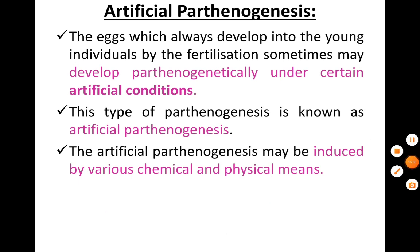The next concept is Artificial Parthenogenesis. As the name suggests, this does not occur in nature, but we can induce this kind of parthenogenesis. The eggs develop into young individuals that would normally require fertilization, but sometimes develop parthenogenetically under certain induced conditions. This can be induced by physical agents or chemical agents.